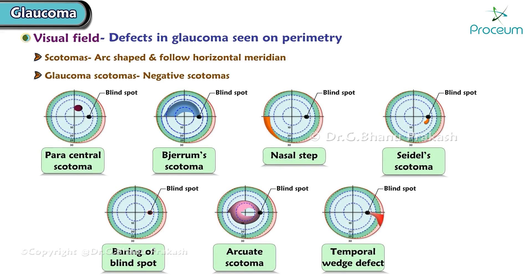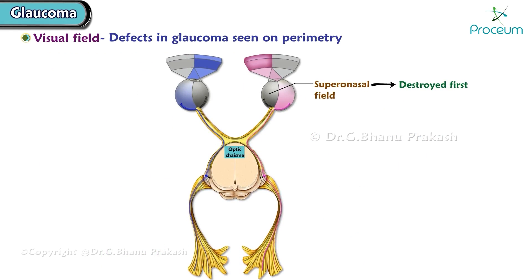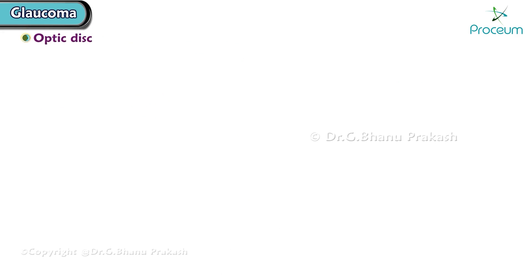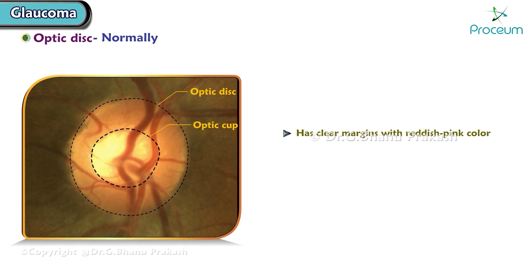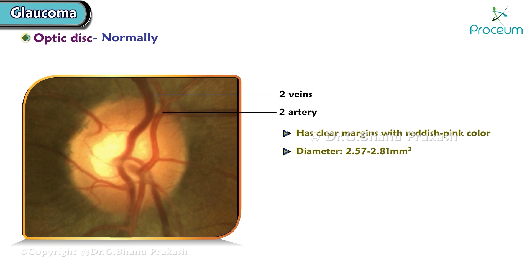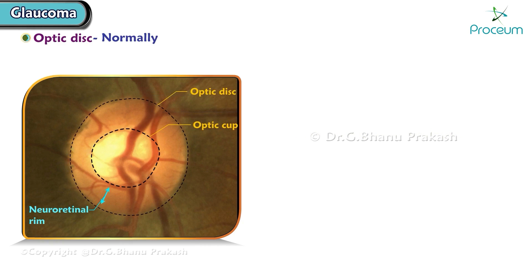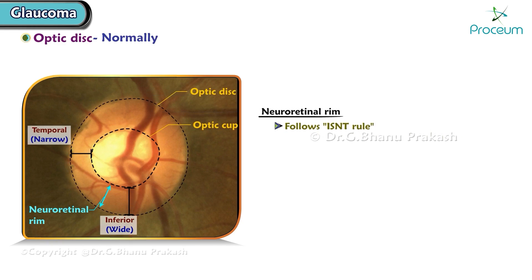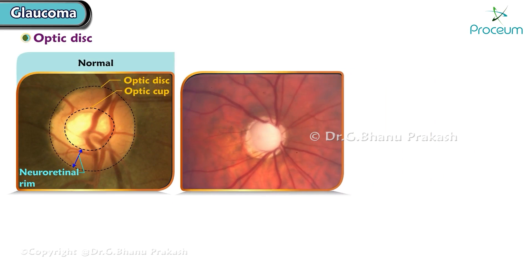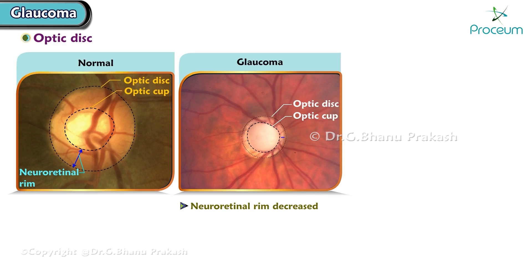Glaucoma scotomas are negative scotomas. Characteristically, superonasal fields are first destroyed and temporal vision is destroyed last. Normally, the optic disc has clear margins with reddish-pink color and a diameter of 2.57 to 2.81 square millimeters. There are two central retinal arteries and two central retinal veins. Normally, the neuroretinal rim is widest inferiorly and narrowest temporally, following the ISNT rule: inferior greater than superior greater than nasal greater than temporal.